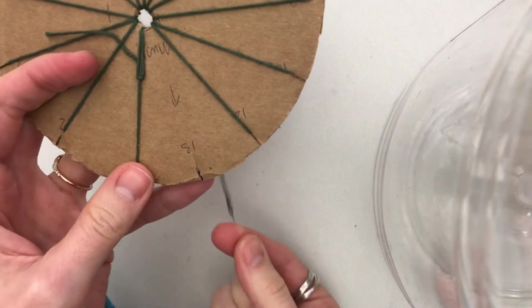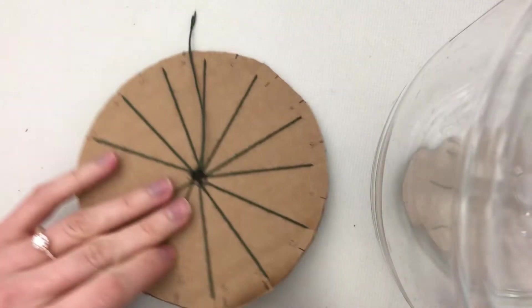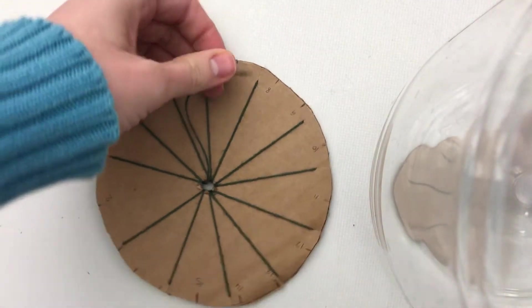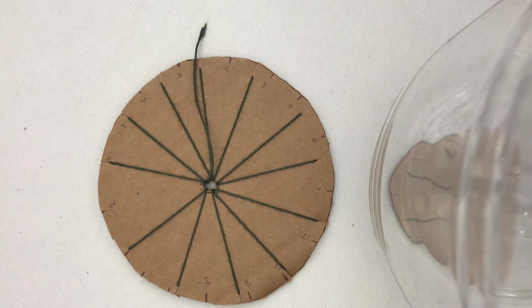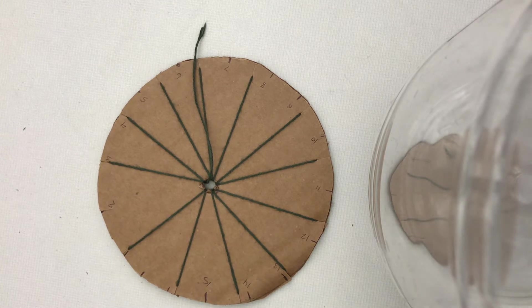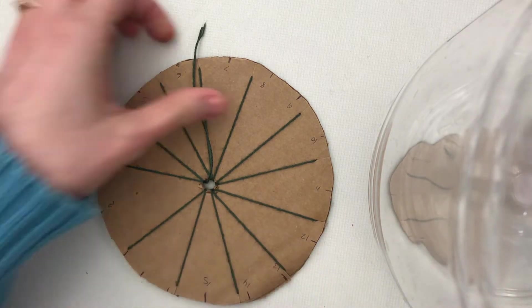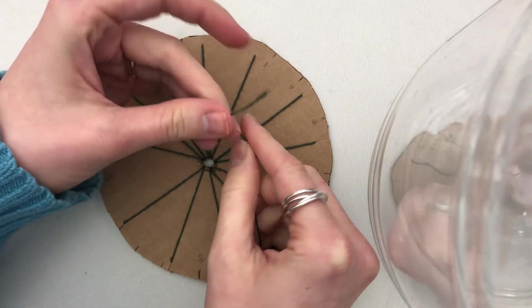If your string happens to be too short, like mine is here, you can just grab another one and tie it together. When I tie it together, I use what I like to call the square knot, but any knot that works for you works.